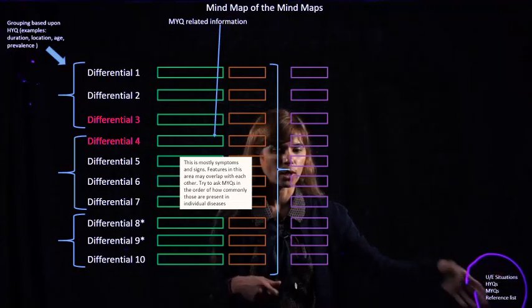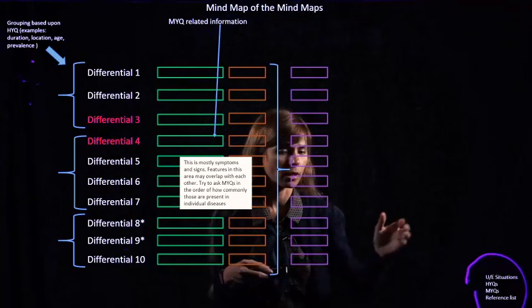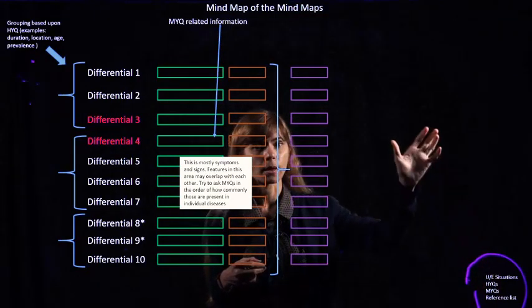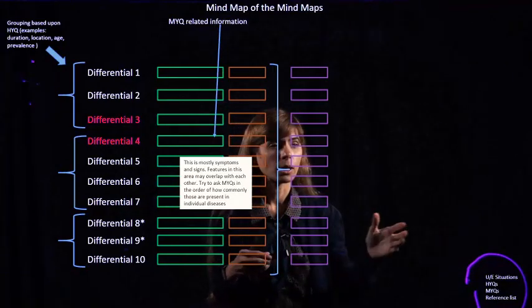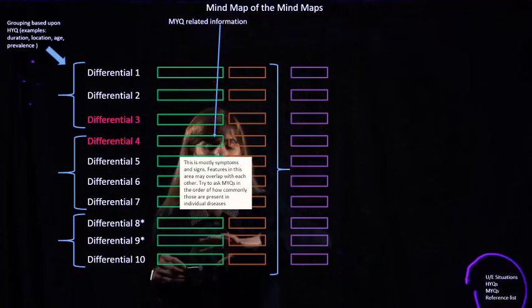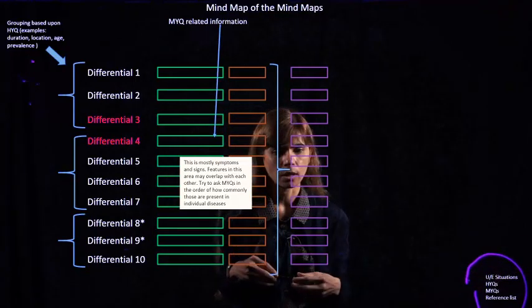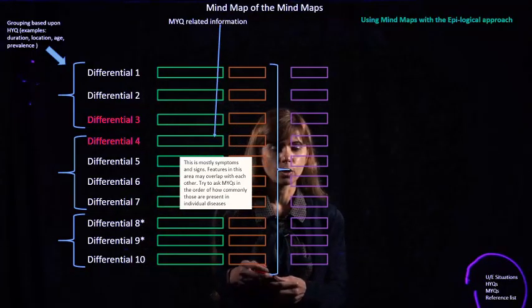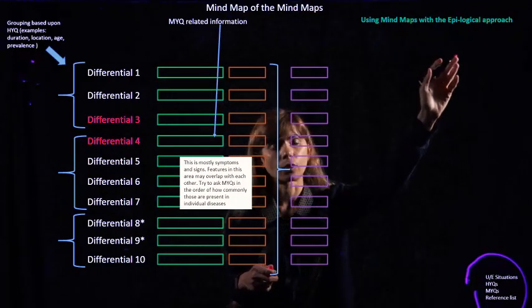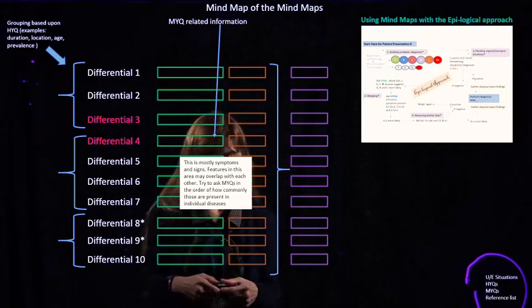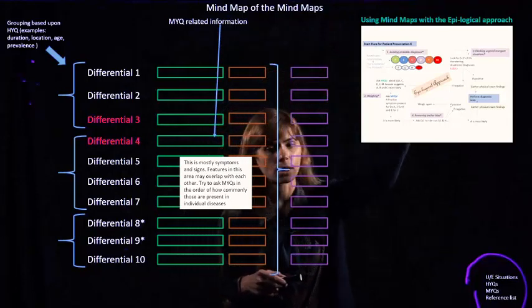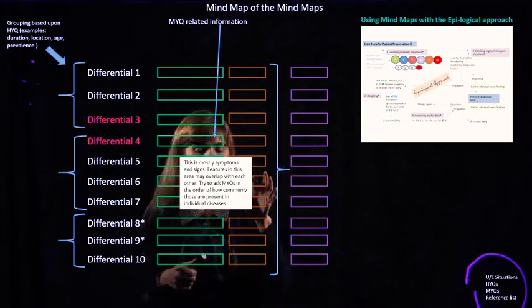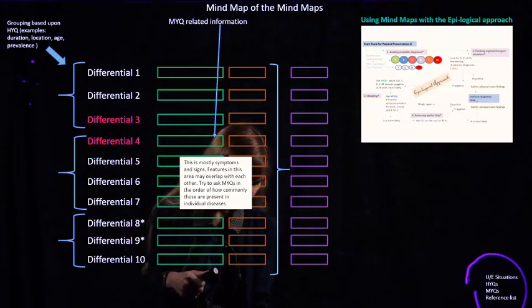There will be a little bit of information on what is a high yield question for this particular mind map or patient presentation. There will also be information on what are some of the medium yield questions. You will sometimes see a list of reference questions or backup questions. Just in case if you forget some features here in front of the differentials, you can refer back to that list. This may or may not always be present. How can we use the mind maps with the epilogical approach? It is a four-step approach that we are going to be using throughout the year for all patient presentations.